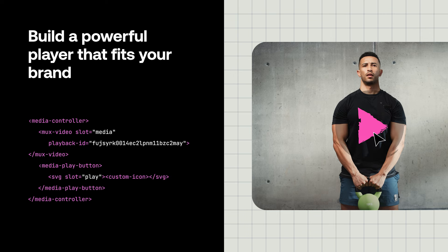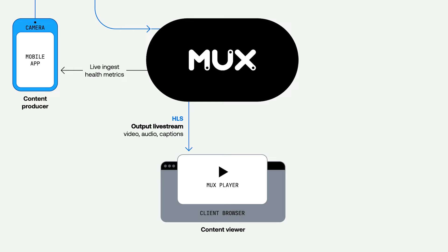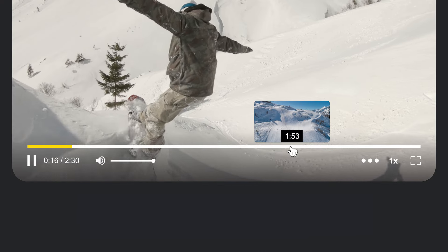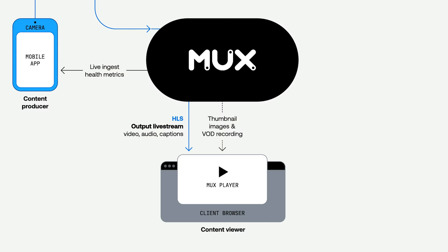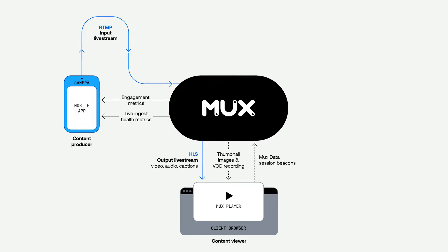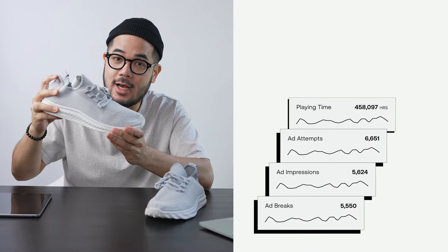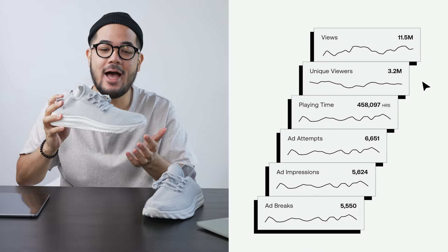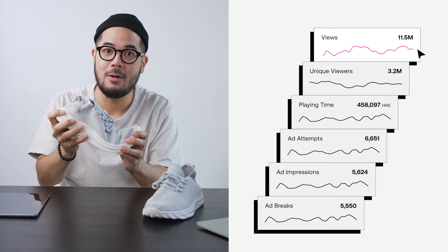While we think Mux Player is pretty great, keep in mind you don't have to use it — you can use any player that supports HLS. Here in the diagram, we have thumbnail images coming down from Mux, which is what we use to create the timeline of previews within Mux Player, sourced from the image API. We also have the Mux Data session beacons being sent back to Mux to keep track of playback quality, which then powers the engagement metrics feature that you can use to send to your content creator so that they know how many people are watching as they live stream. Note that the Mux Data session beacons are not dependent on using Mux Player — you can integrate with any player you decide to use.